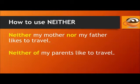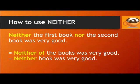Here are some more examples. 'Neither my mother nor my father likes to travel.' 'Neither of my parents likes to travel.' We use neither...nor when naming both items specifically, and 'neither of' when talking about my parents together as a group. 'Neither the first book nor the second book was very good.' 'Neither of the books was very good.' Or, 'neither book was very good.'